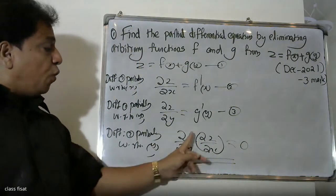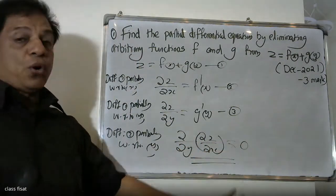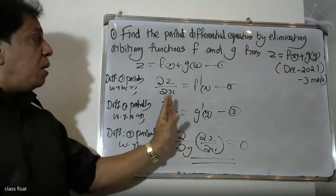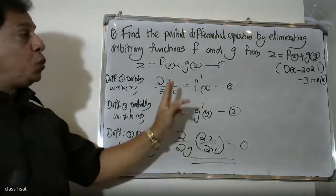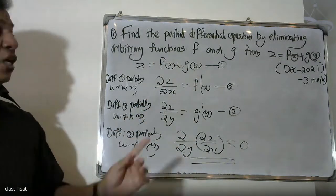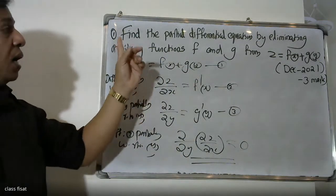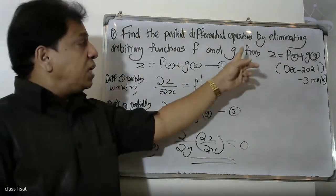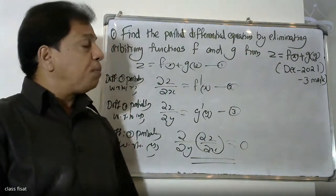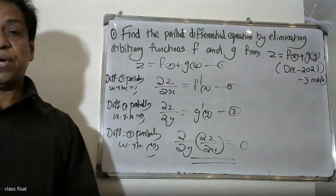The answer is ∂²Z/∂x∂y equals 0. This is the required partial differential equation obtained by eliminating the two arbitrary functions f and g from the relation Z equals f of x plus g of y.